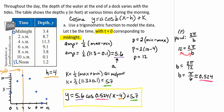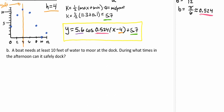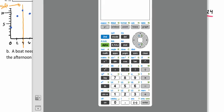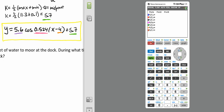We're going to continue with this problem. A boat needs at least 10 feet of water to moor at the dock. During what times in the afternoon can it safely dock? Using a graphing utility, we can graph the model along with a line y equals 10.